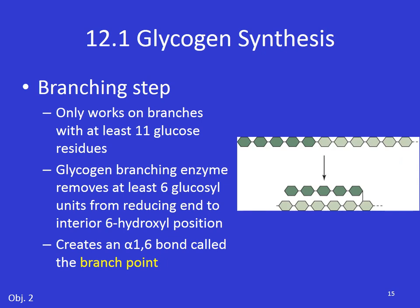We talked about how to extend a chain of glucose in a glycogen by the carbocation attacking at the 4-prime position. But how do we make these branches at the 6th position? Glycogen branching enzyme only works on branches that already have at least 11 glucose residues. It removes at least 6 of the glycosyl units from the reducing end to an interior 6-hydroxyl position — basically picks these up and connects them to a lower point on the chain, creating two ends and thus a branch point. When you have an alpha-1,6 bond in glycogen, that's called the branch point.